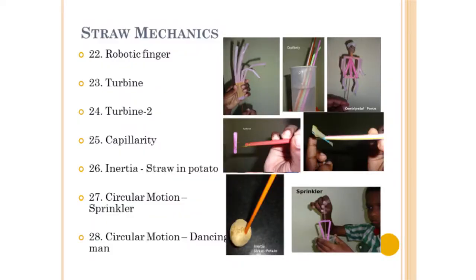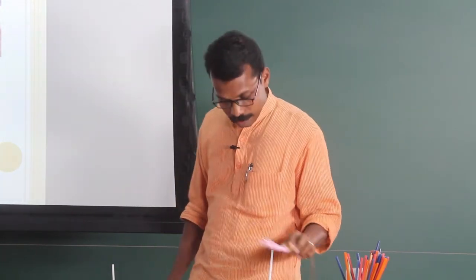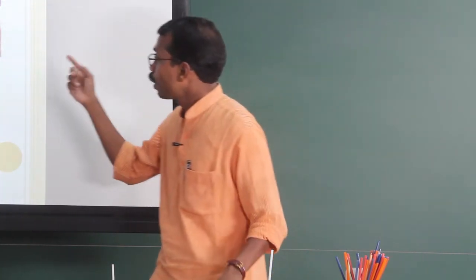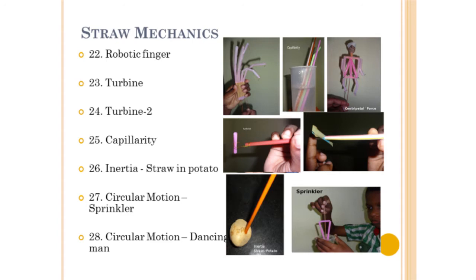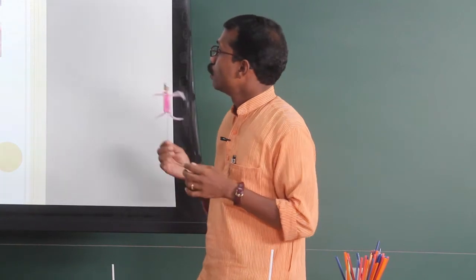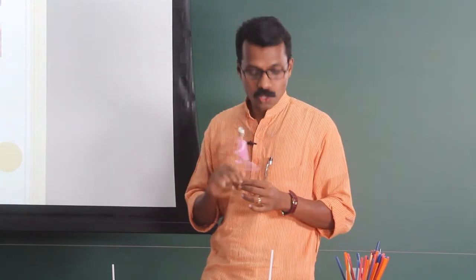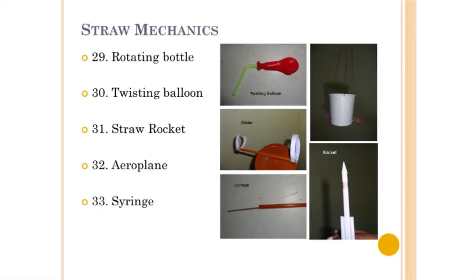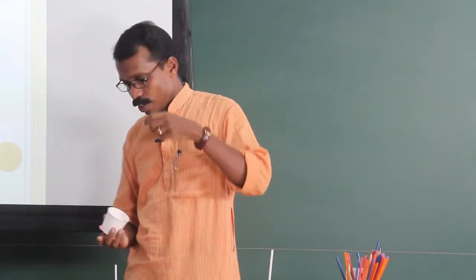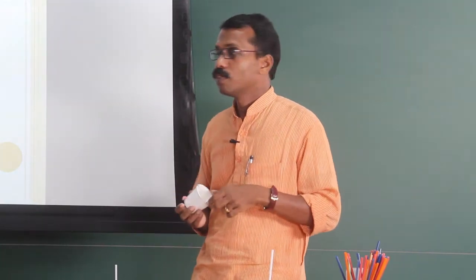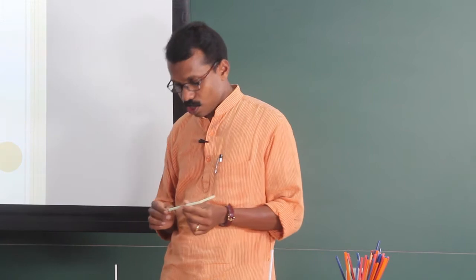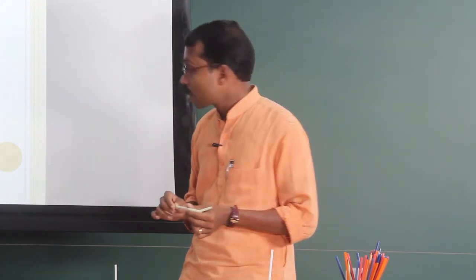There is a robotic finger made of thread and straw which moves, a simple turbine, and another type of turbine. To show inertia, there is a straw inserted into a potato. To show centripetal force, there is a dancing man, and to show the absence of centripetal force, there is a sprinkler. A rotating balloon with a straw on the back side will rotate, and a bottle with water in the opposite direction demonstrates Newton's third law. There is also a straw glider, straw rockets, and a syringe made using a straw with a stick and rubber bands.